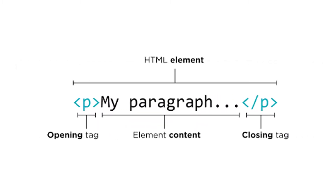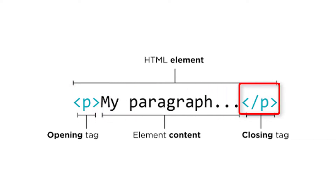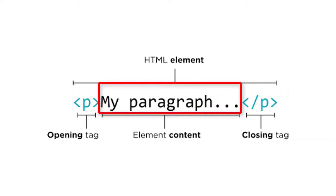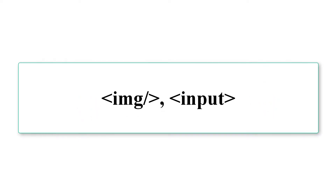Basically, an HTML element must have an open tag and a close tag, and content goes between them. But some tags do not have an open/close tag — instead they use a single tag. For example, image, input, and so on. I will discuss this in more detail later.